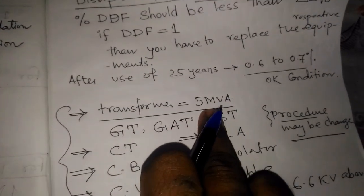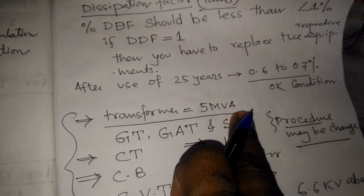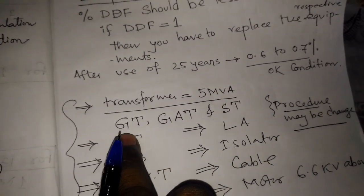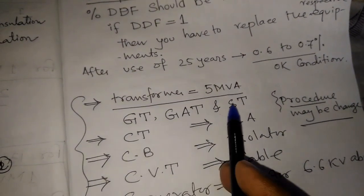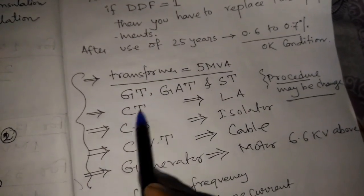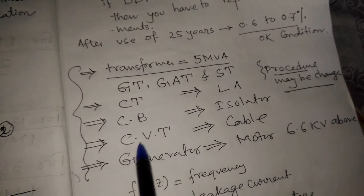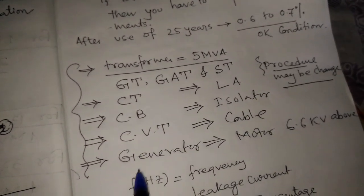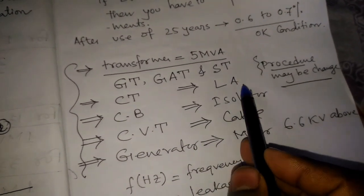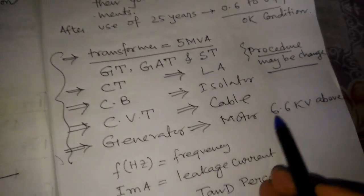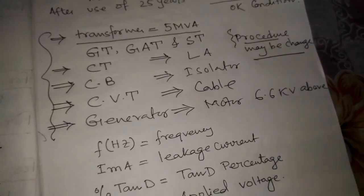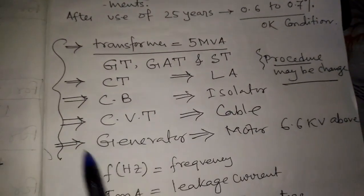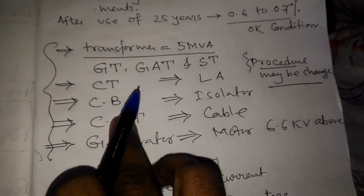For transformers above 5 MVA we perform the Tan Delta test. We do the Tan Delta test on GT, GAT, ST, CT (current transformers), circuit breakers, CVT (capacitive voltage transformers), generators, lightning arresters, isolators, cables, and motors with a rating greater than 6.6 kV. The procedures of the testing may change accordingly.